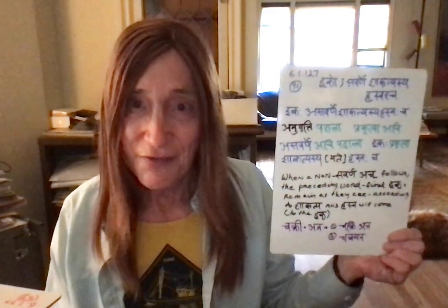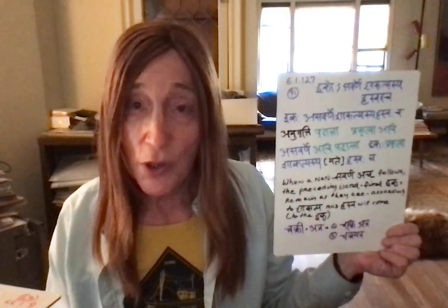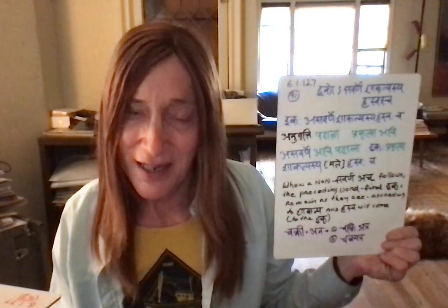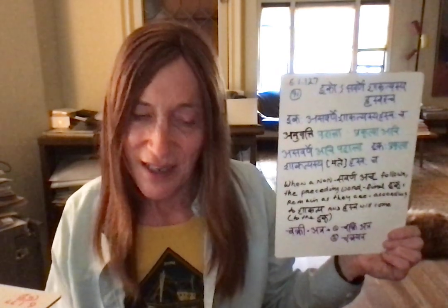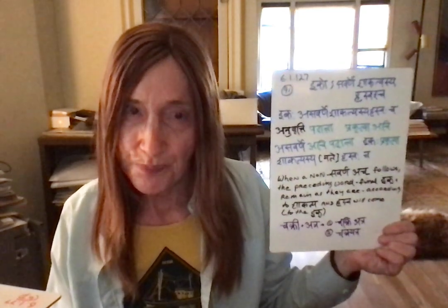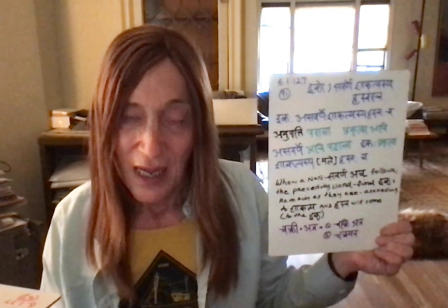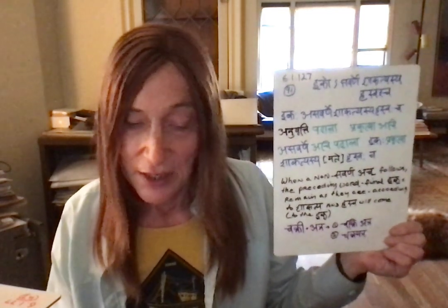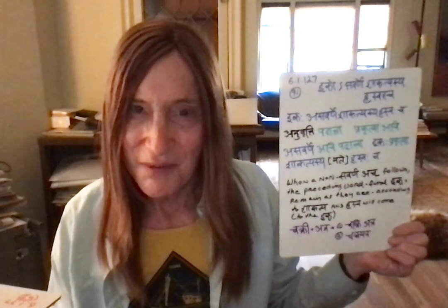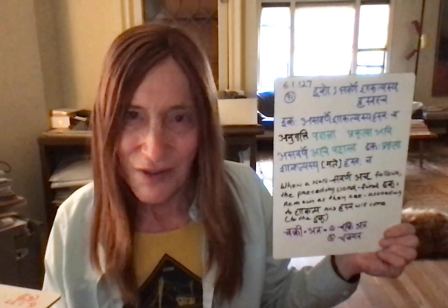The first option is chakri atra — remaining mostly as it is. It's not a hundred percent prakritya because the dirgha i of chakri has become hrasva i, giving chakri atra, but there has not been any sandhi change.